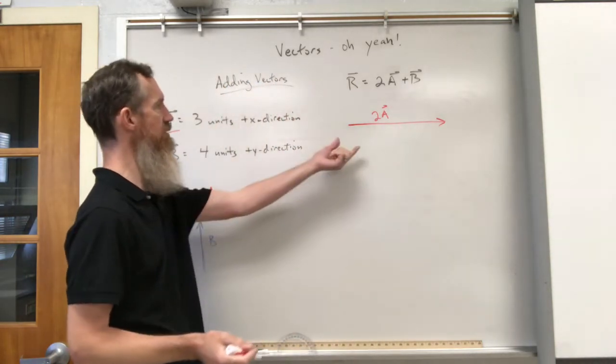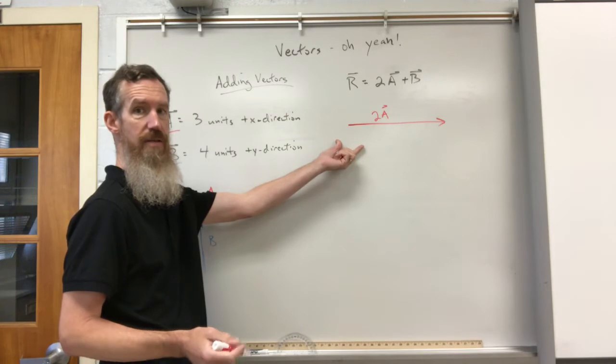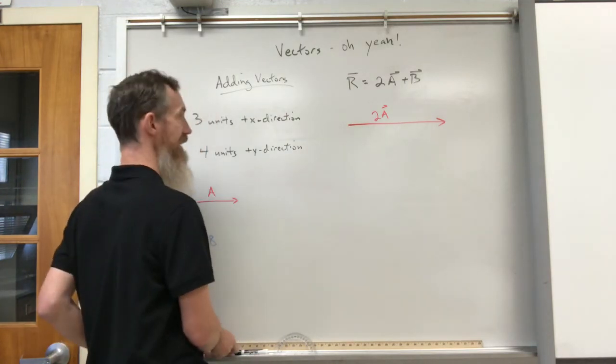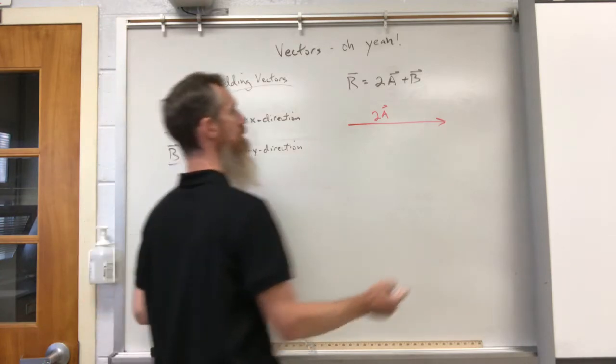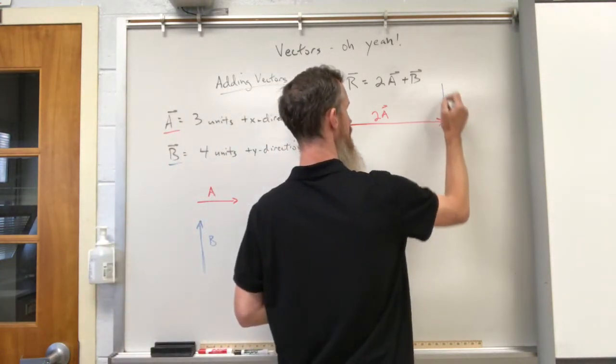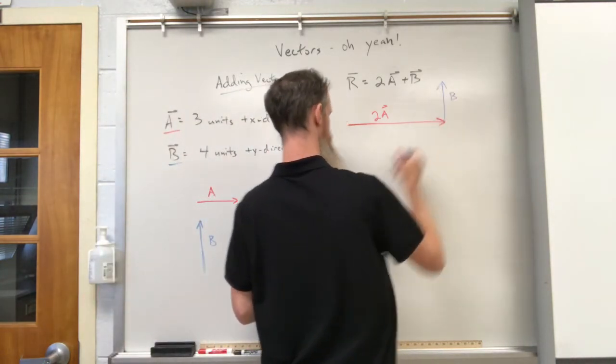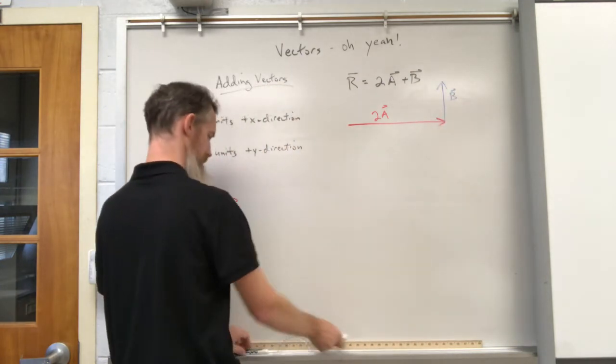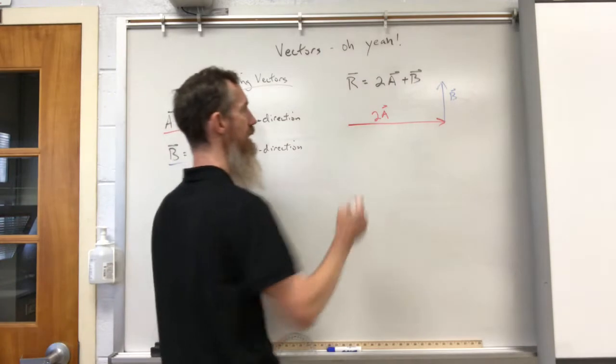And then of course I can add that to vector B, which would be here at the tip. And then of course you could measure it out and find the result.